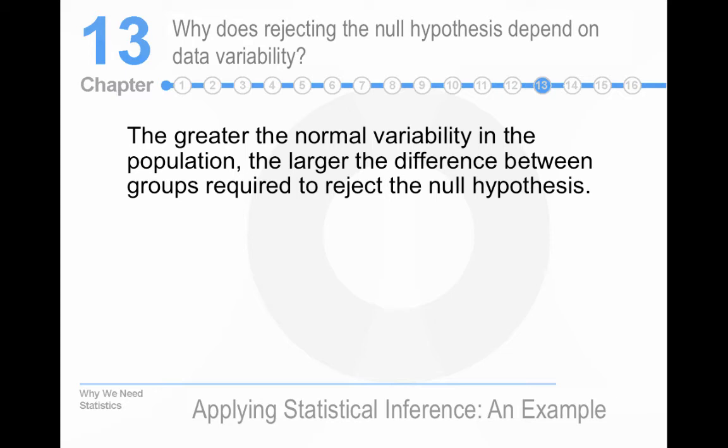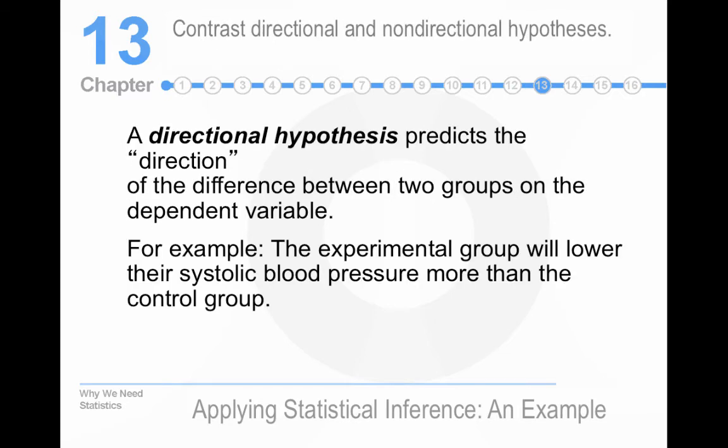True. So, your distributions are likely to have some overlap. What's the difference between directional and non-directional hypotheses? Well, a directional hypothesis predicts the direction of difference based on the independent variable.